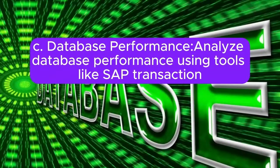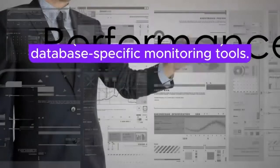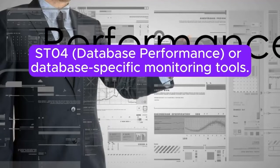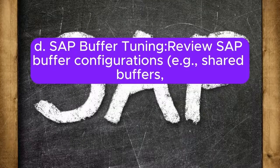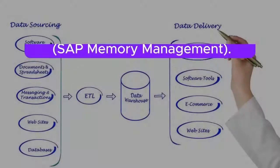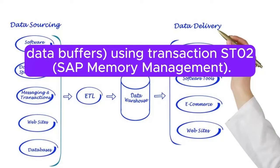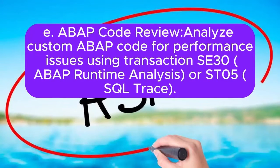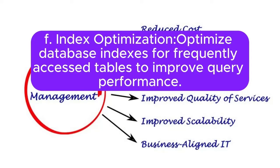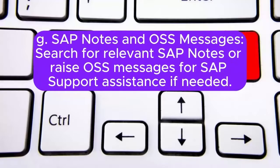C. Database performance: analyze database performance using tools like SAP transaction ST04 database performance or database-specific monitoring tools. D. SAP buffer tuning: review SAP buffer configurations, e.g. shared buffers, data buffers using transaction ST02 SAP memory management. E. ABAP code review: analyze ABAP code for performance issues using transaction SE30 ABAP runtime analysis or ST05 SQL trace. F. Index optimization: optimize database indexes for frequently accessed tables to improve query performance. G. SAP notes and OSS messages: search for relevant SAP notes or raise OSS messages for SAP support assistance if needed.